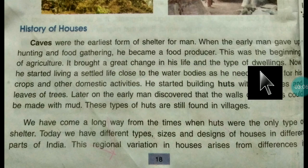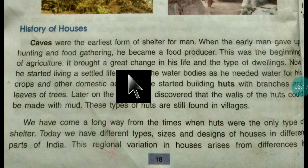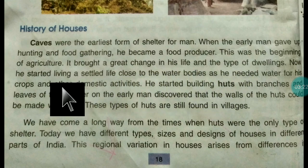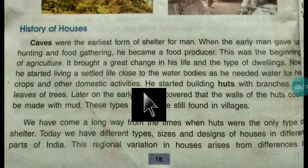This was the beginning of agriculture and it brought a great change in his life and the type of dwellings. He started living in one place instead of caves, close to water bodies, as he needed water for his crops and other domestic activities. Earlier he was a nomad, but when he started cultivation he settled near water bodies to look after his crops from wild animals.